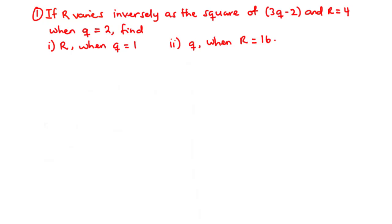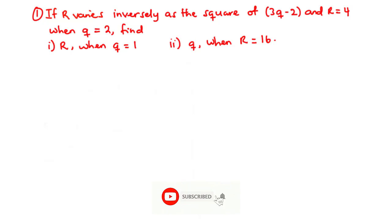If r varies inversely as the square of (3q minus 2), and r is equal to 4 when q is 2, find: part i, r when q is 1, and part ii, q when r is equal to 16.